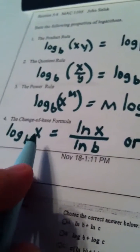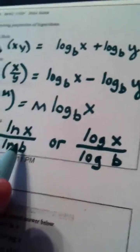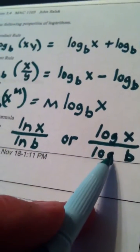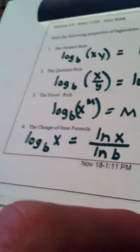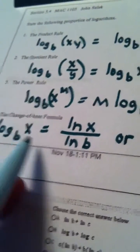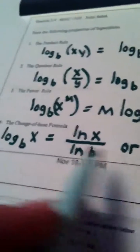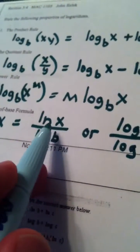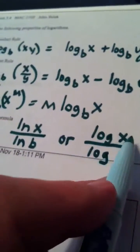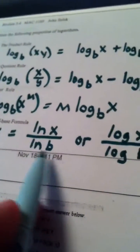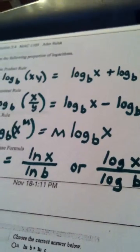So the change of base formula turns a log function into a division problem where either the natural log appears on both top and bottom, or the log appears on both top and bottom. What used to be the base ends up with the log or natural log on the bottom, and what used to be the input ends up as the natural log of x or the log of x on the top. So basically, the base was lower, it stays lower is a good way to think about it.